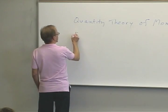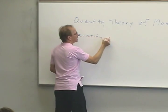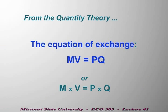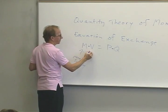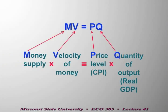There's something called the equation of exchange that is at the center of this quantity theory of money. The equation of exchange is MV equals PQ. M is the money supply. V is the velocity of money — the turnover rate. How many times each year is the average dollar spent in the money supply to purchase goods and services?